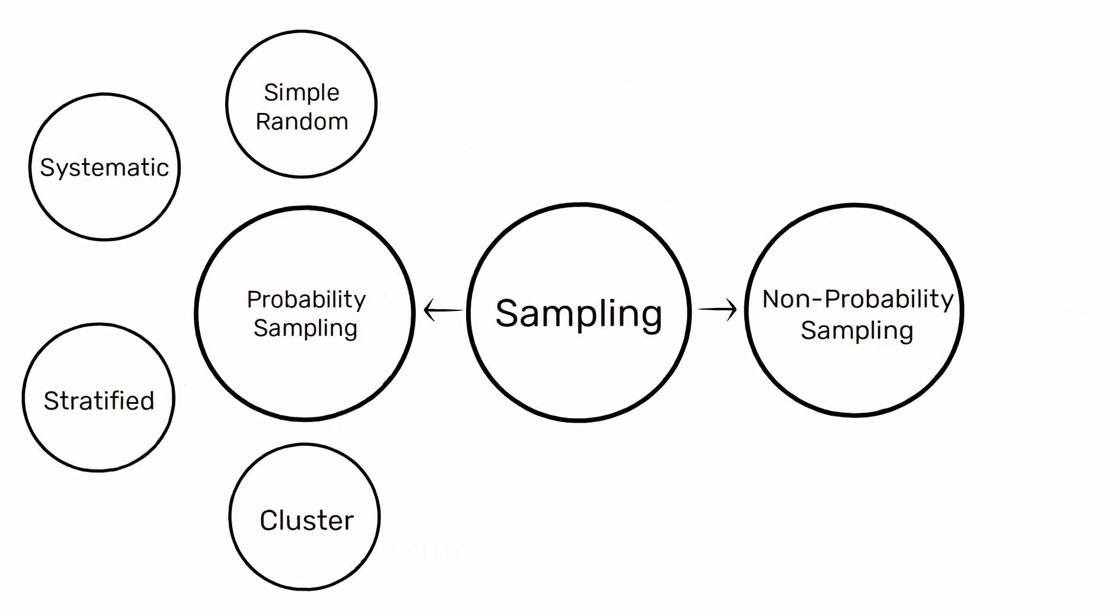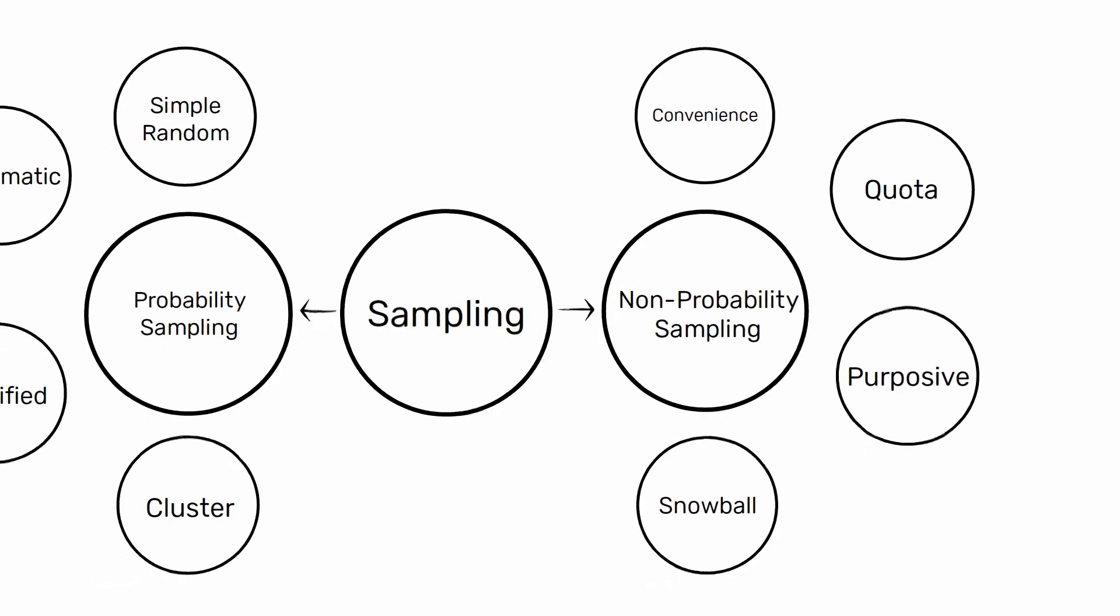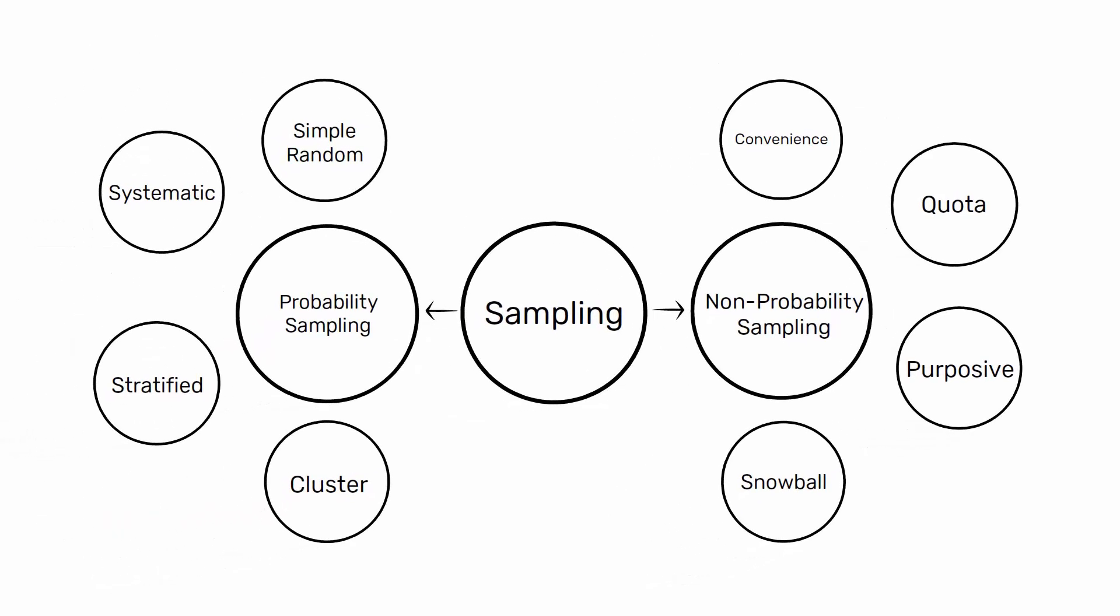Non-probability sampling methods: 1. Convenience sampling. 2. Quota sampling. 3. Purposive sampling. 4. Snowball or referral sampling. Let's see the characteristics of each sampling technique.